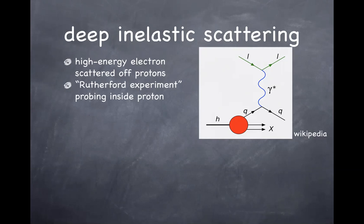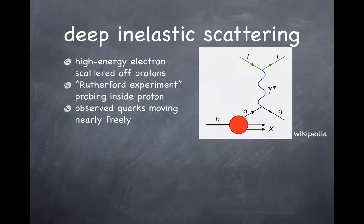Rutherford concluded that much of the electric charge inside the atom is concentrated at the very center within a tiny volume, and he could even estimate the size of the nucleus. Similarly, by firing high-energy electrons at protons, as long as the momentum transfer is larger than the inverse size of the proton — h-bar over m_proton c — the electron has the resolution to probe what's inside the proton. And indeed, there was the observation that something almost backscatters the electron. There seem to be point-like objects inside the proton where the electric charge is concentrated.